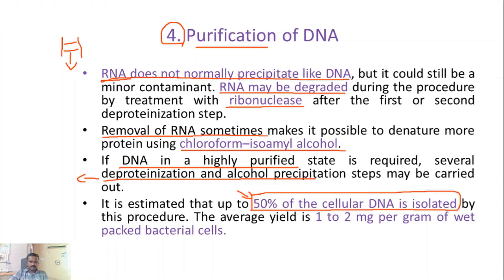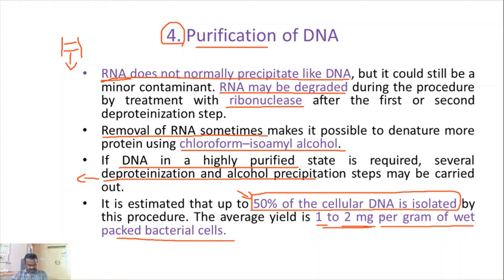To achieve this 50 percent yield, you follow all steps: ribonuclease treatment, proteinase K treatment, phenol-chloroform-isoamyl treatment, and ethanol precipitation. From this we get 50 percent — that is, one to two milligrams of DNA per gram of wet bacterial cell.